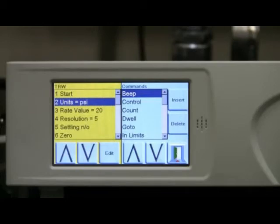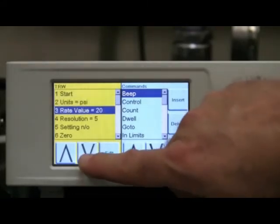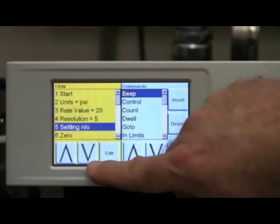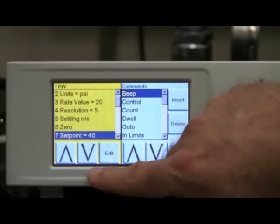Each program can have multiple steps and perform various functions. For example, in this program, the units are first set to psi, the control rate is set to 20, the pressure resolution to 5 digits, and the slew rate to no overshoot. The unit will then perform a zero before controlling to the first set point, which is 40 psi.